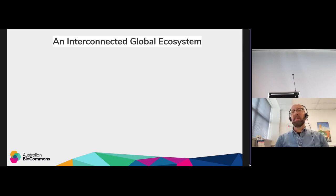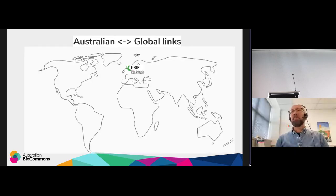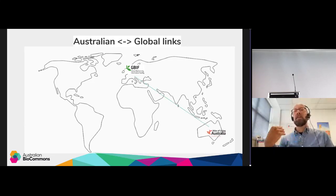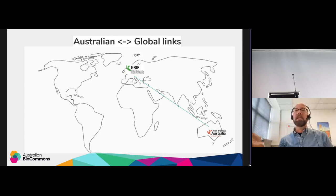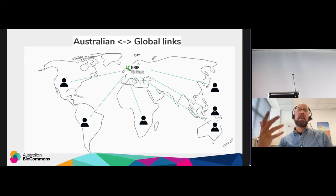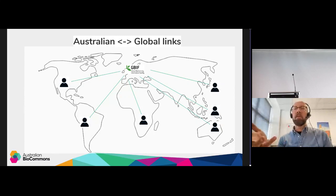We sit in an interconnected global ecosystem. One obvious example is GBIF, which is hosted through a centralized group in Denmark. From Australia, species occurrence records are fed to GBIF from the Atlas of Living Australia, which in turn aggregates species occurrence records from state-based organizations and others across the country. Once fed up to GBIF, this information is available globally for the whole world to use.